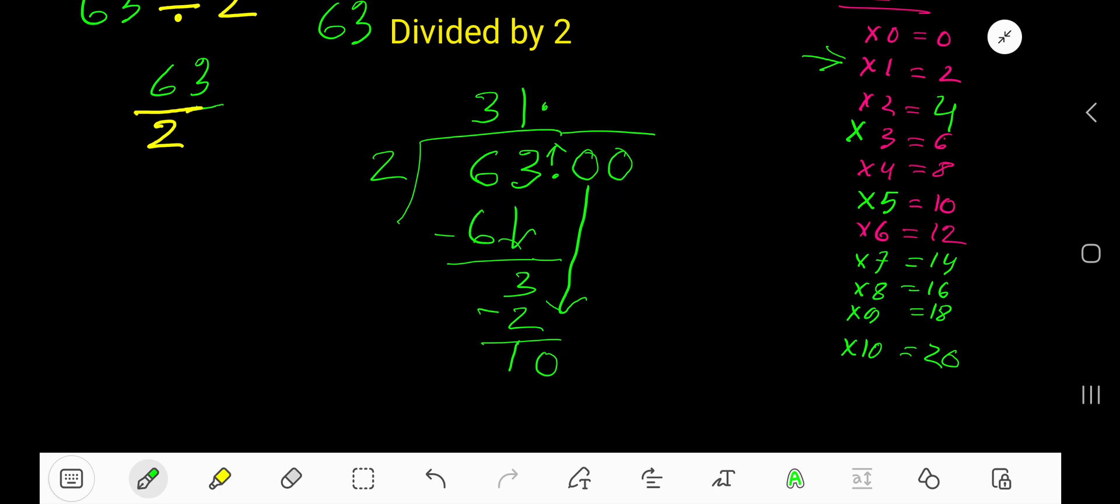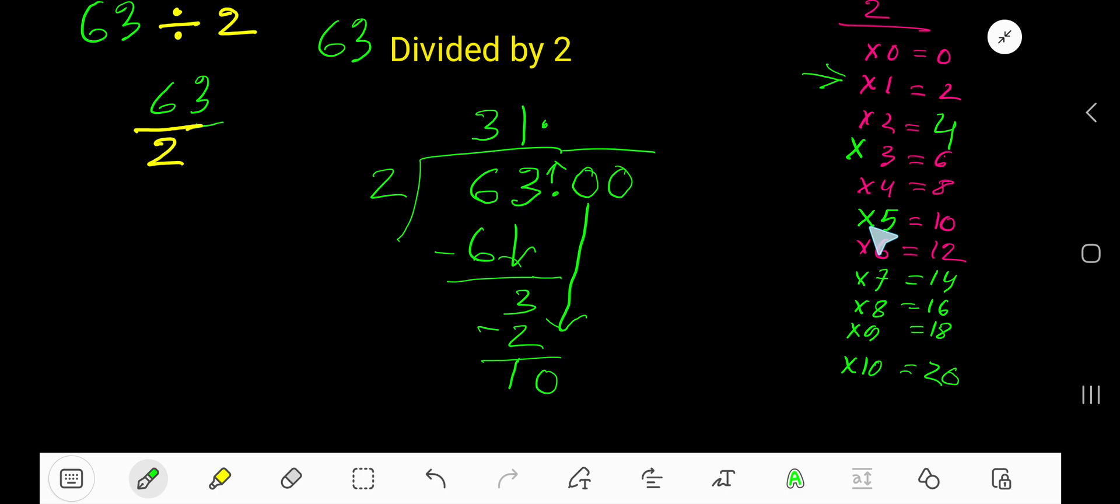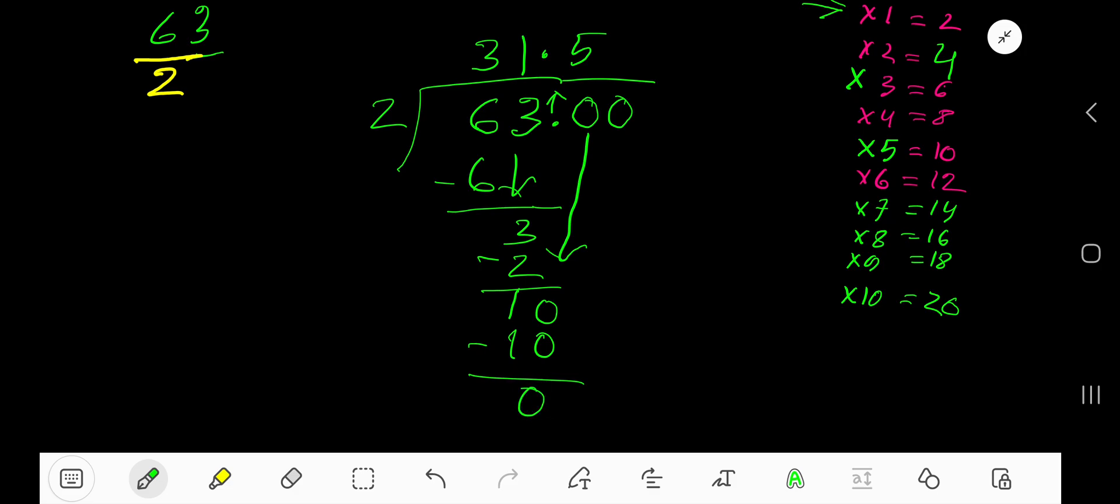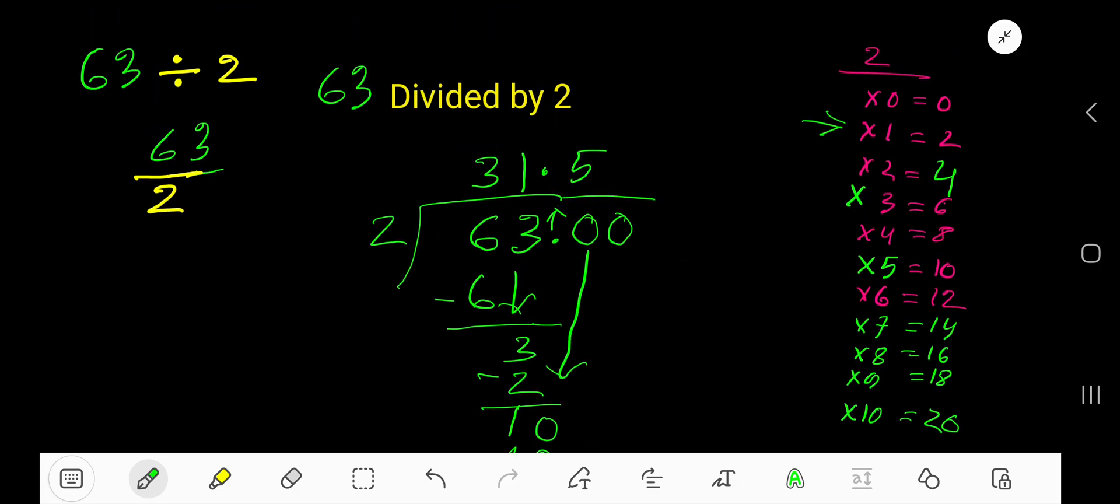Decimal must come to the quotient directly. So 2 goes into 10 how many times? 5 times. Write 5. 5 times 2 equals 10. If you subtract, you are getting 0. So 31.5 is your answer.